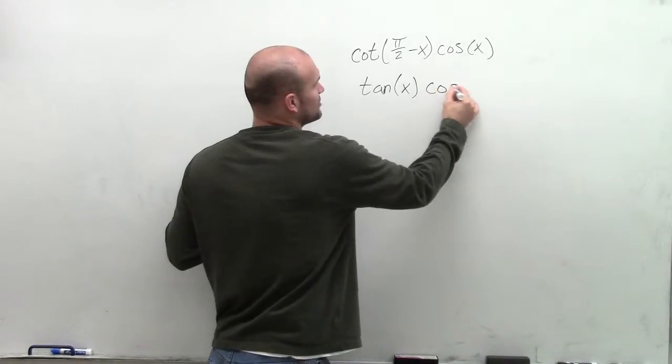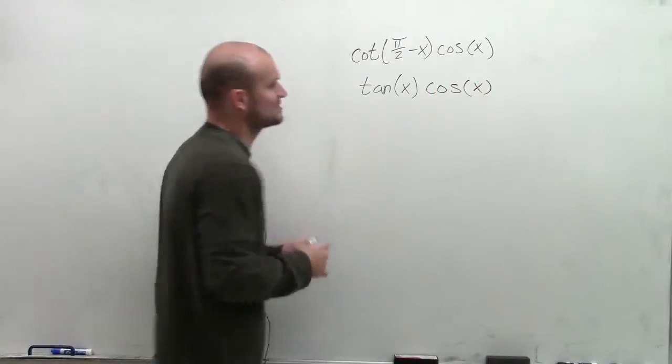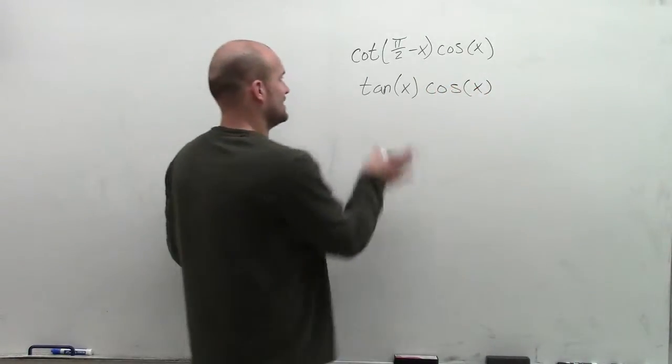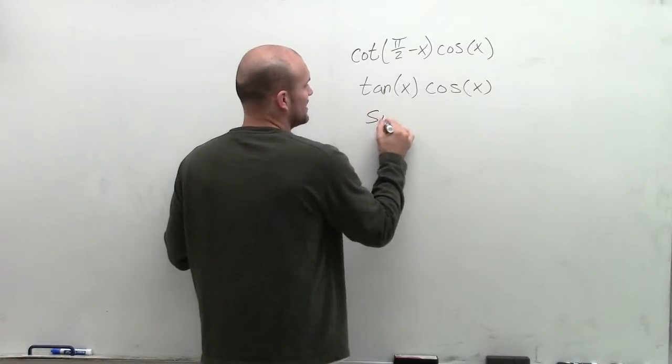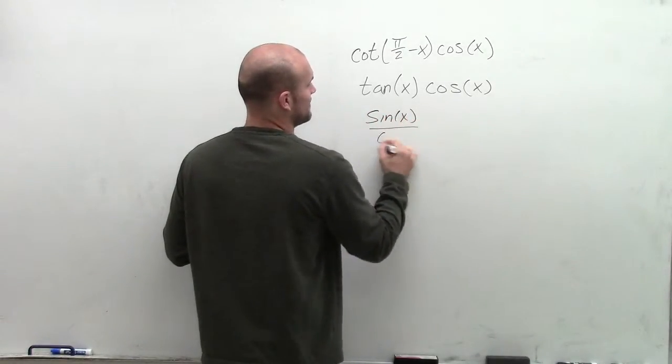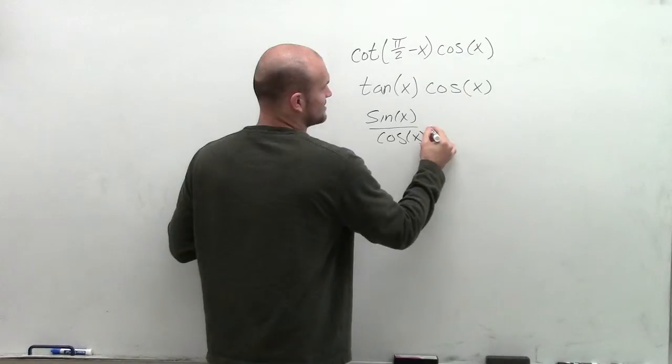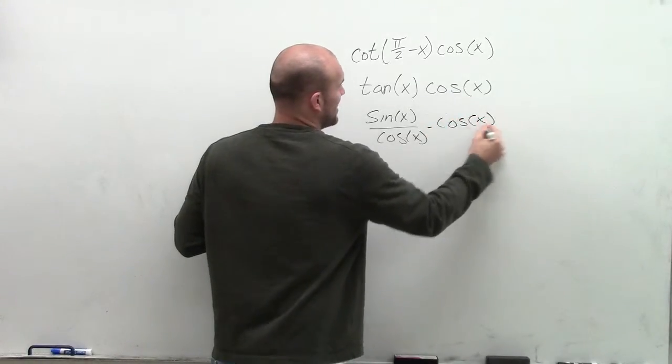Then I multiply that times cosine of x. By using my quotient identities, I can rewrite tangent of x as sine of x divided by cosine of x, times the cosine of x over 1. Make sure we represent that in the numerator.